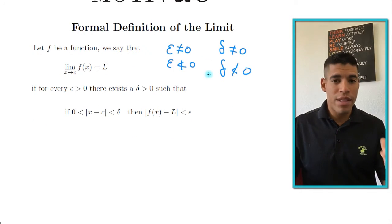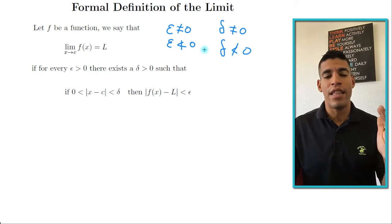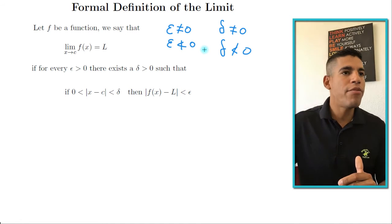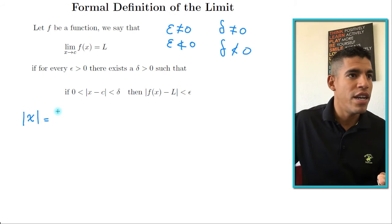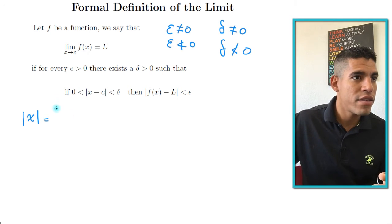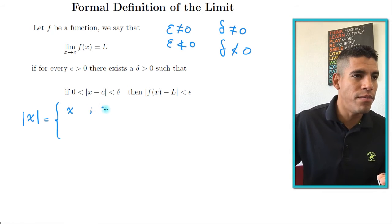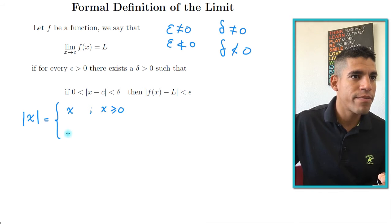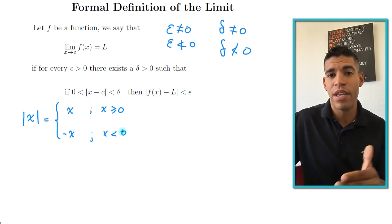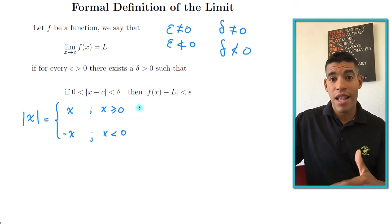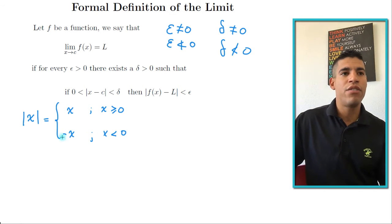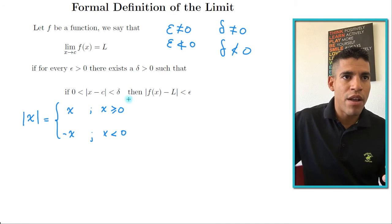Before we start with the definition, we need the definition of absolute value. The absolute value of x is a piecewise function: it equals x when x ≥ 0, and equals −x when x < 0. So for example, the absolute value of −3: since −3 < 0, we use the bottom case and get −(−3) = 3.